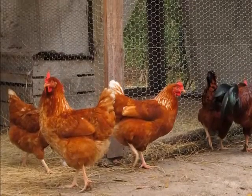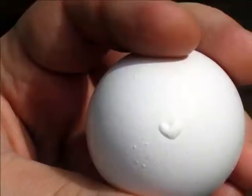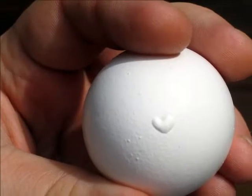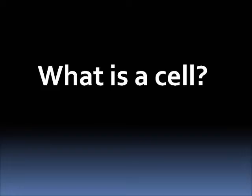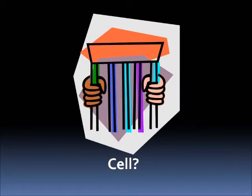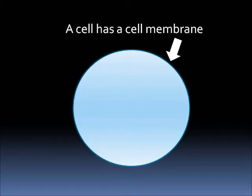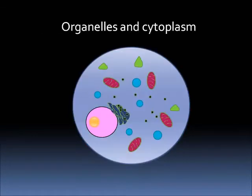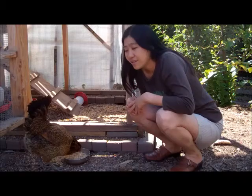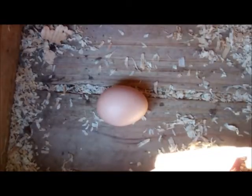A chicken is made up of billions of cells. An egg is a single cell. A cell has a cell membrane, a nucleus with chromosomes in it, organelles and cytoplasm. Chickens come from eggs.